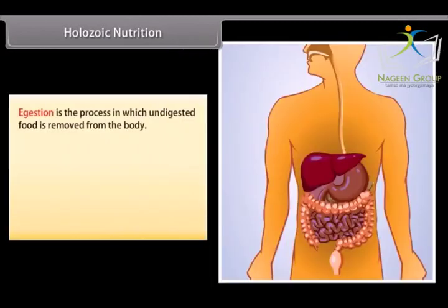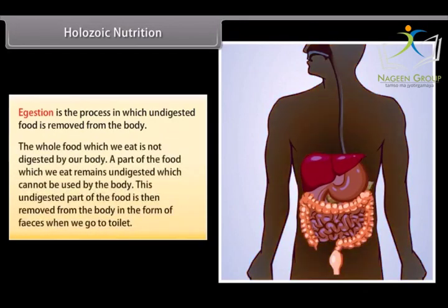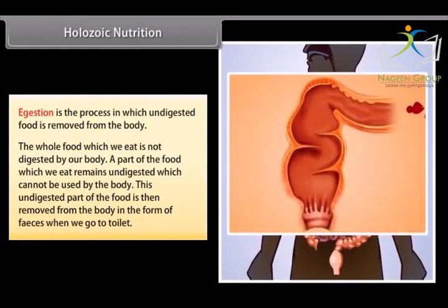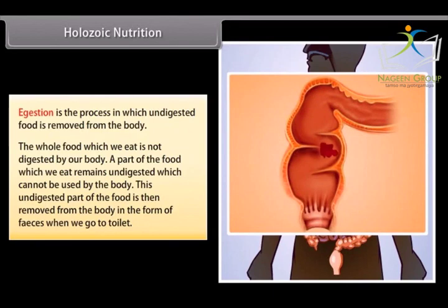Egestion is the process in which undigested food is removed from the body. Not all food we eat is digested; a part remains undigested and cannot be used by the body. This undigested part is then removed from the body in the form of feces when we go to the toilet.